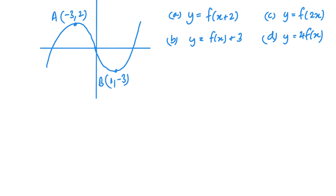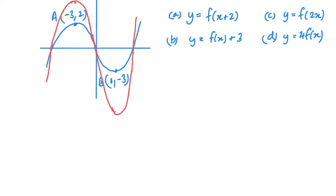Part d: the 4 is outside of f of x, so it affects the y. It's multiplied by 4, and for y you do exactly what you expect — so we're stretching vertically. For point a, the x stays the same and the y is multiplied by 4. For point b, the x stays the same but the y is multiplied by 4 as well.